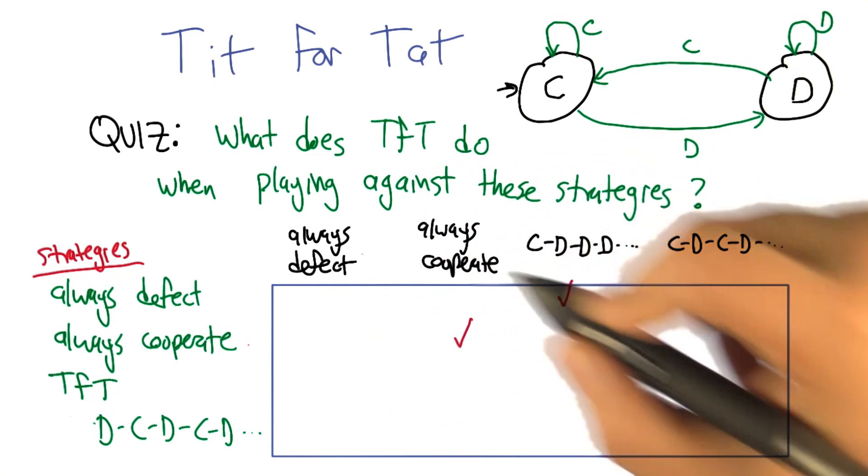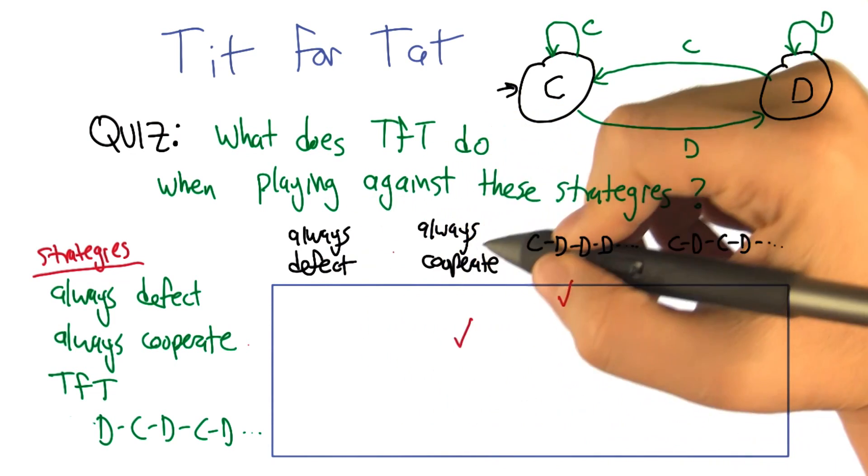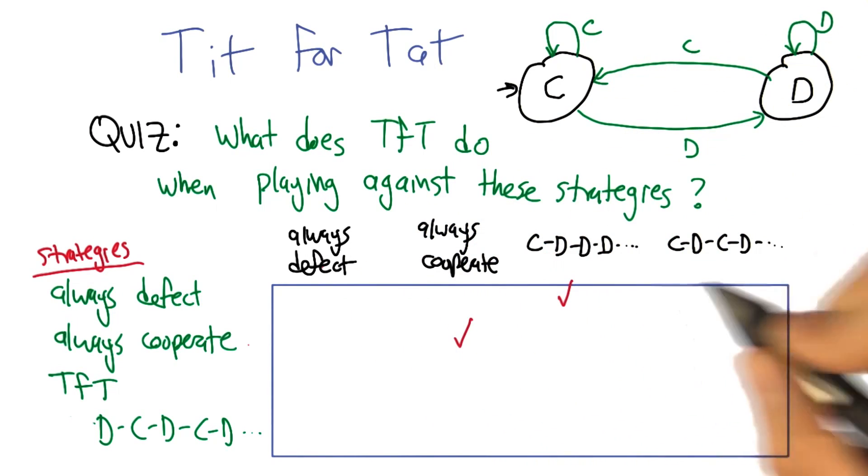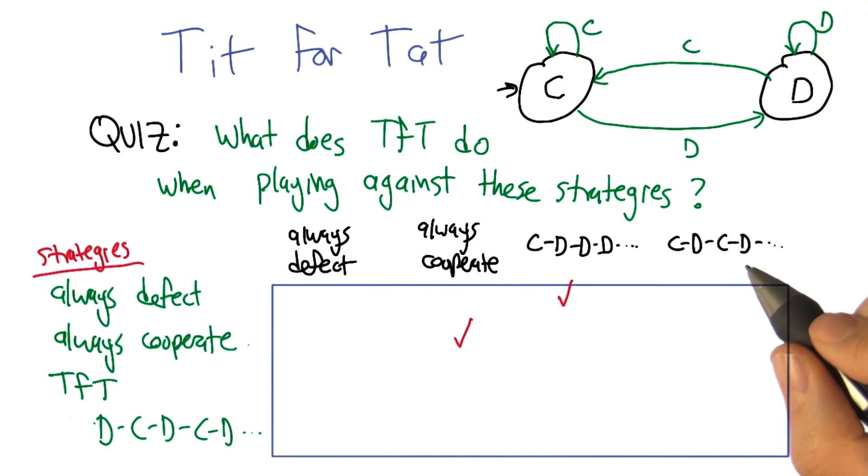Yeah. So I put this always defect in there, but actually it can't ever be the right answer, right? Because tit for tat always starts off cooperating. So the other three seem like they might be possible. Always defect is not possible. Good.